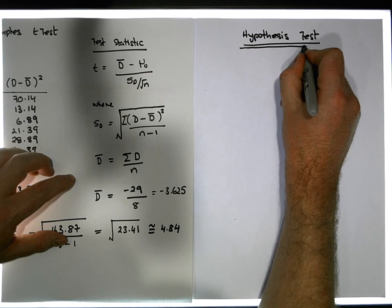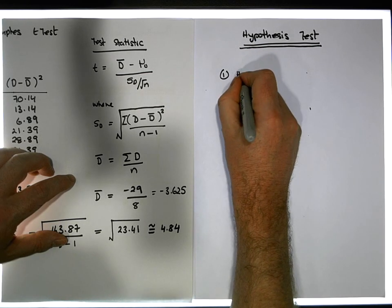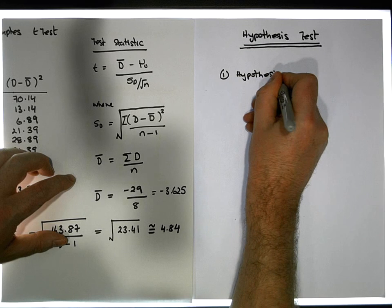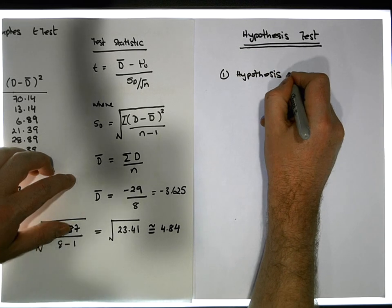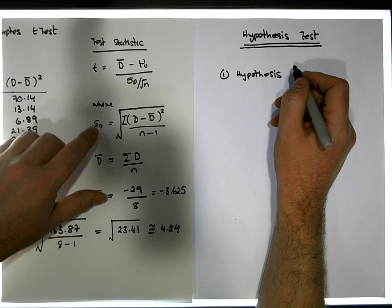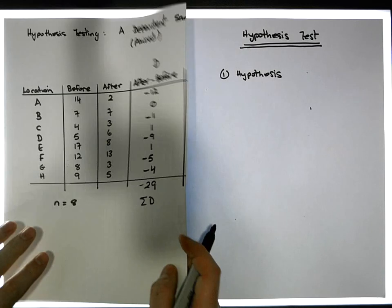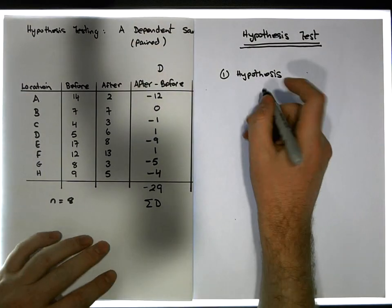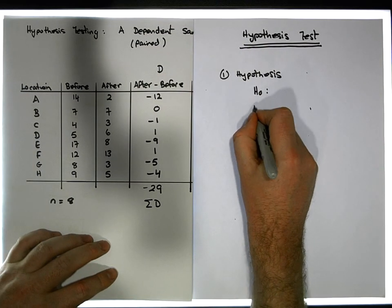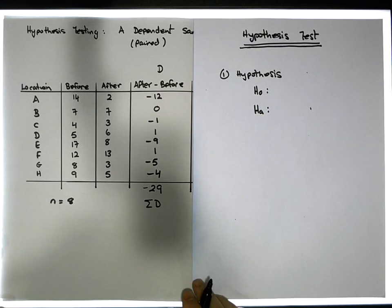The first thing we need to define is our hypothesis. Don't forget that the hypothesis is a statement about the population parameter. It's going to have a null position H₀ and an alternative position Hₐ.